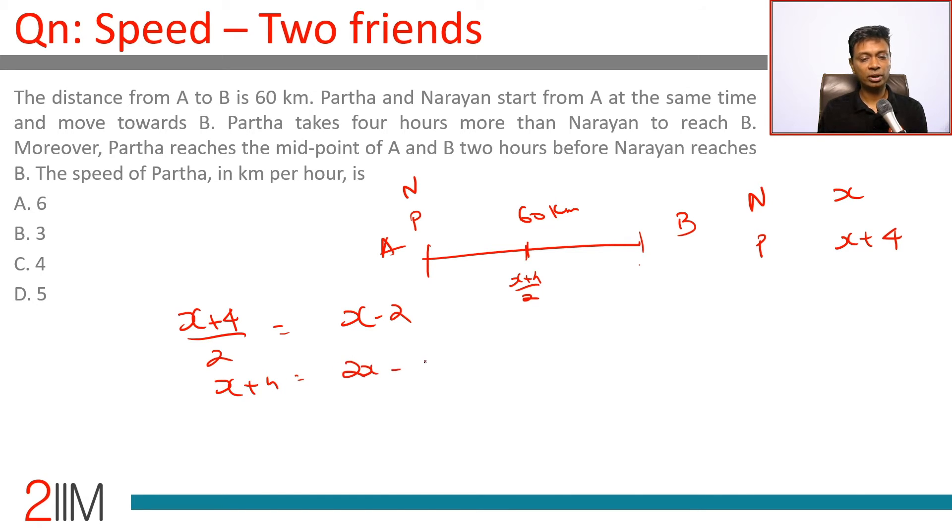X plus 4 is 2X minus 4, so 8 is X, or X is 8. Narayan takes 8 hours, Partha takes 12 hours. The speed of Partha in kilometers per hour: 60 kilometers, 12 hours, 5 kilometers per hour.